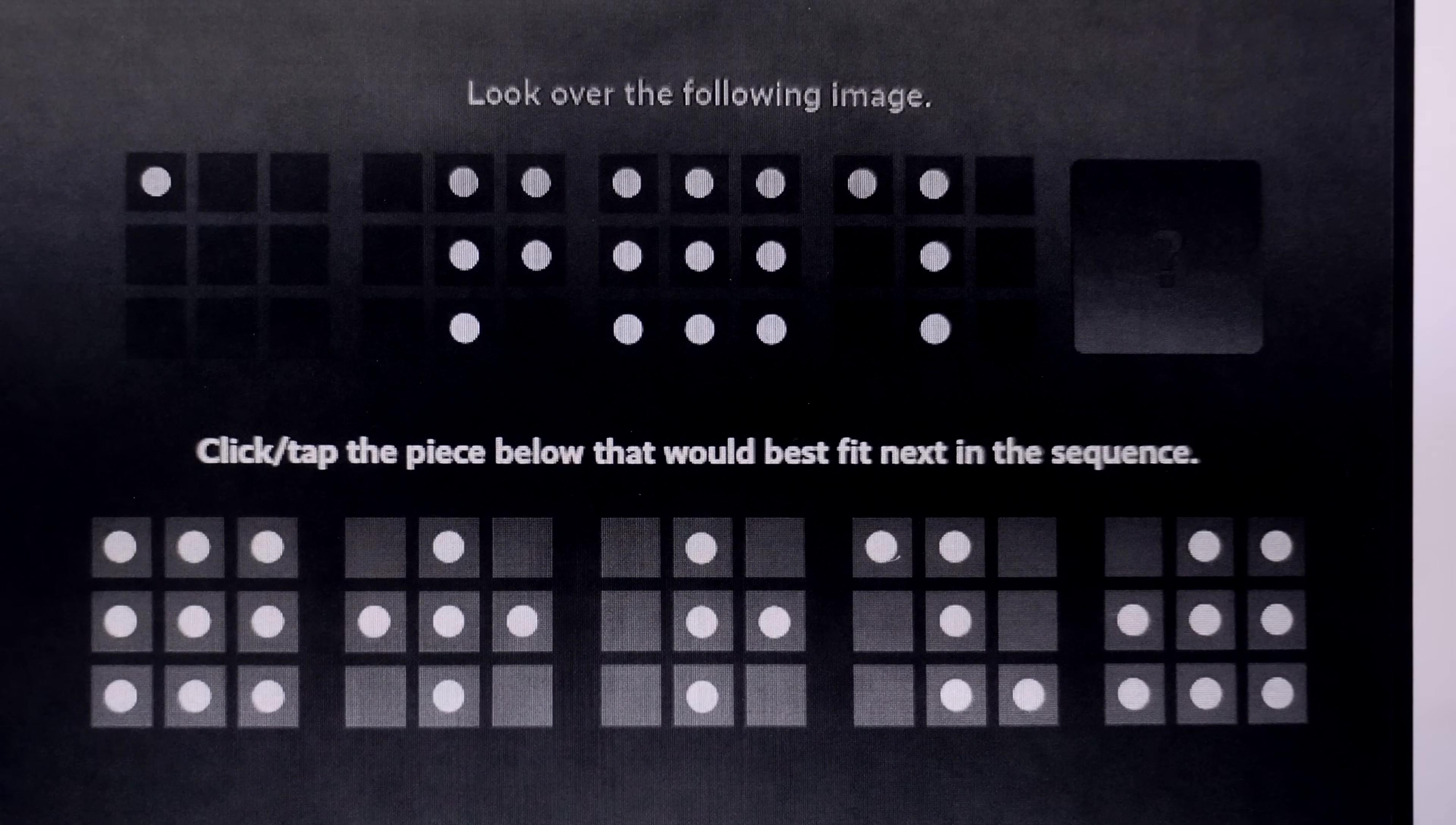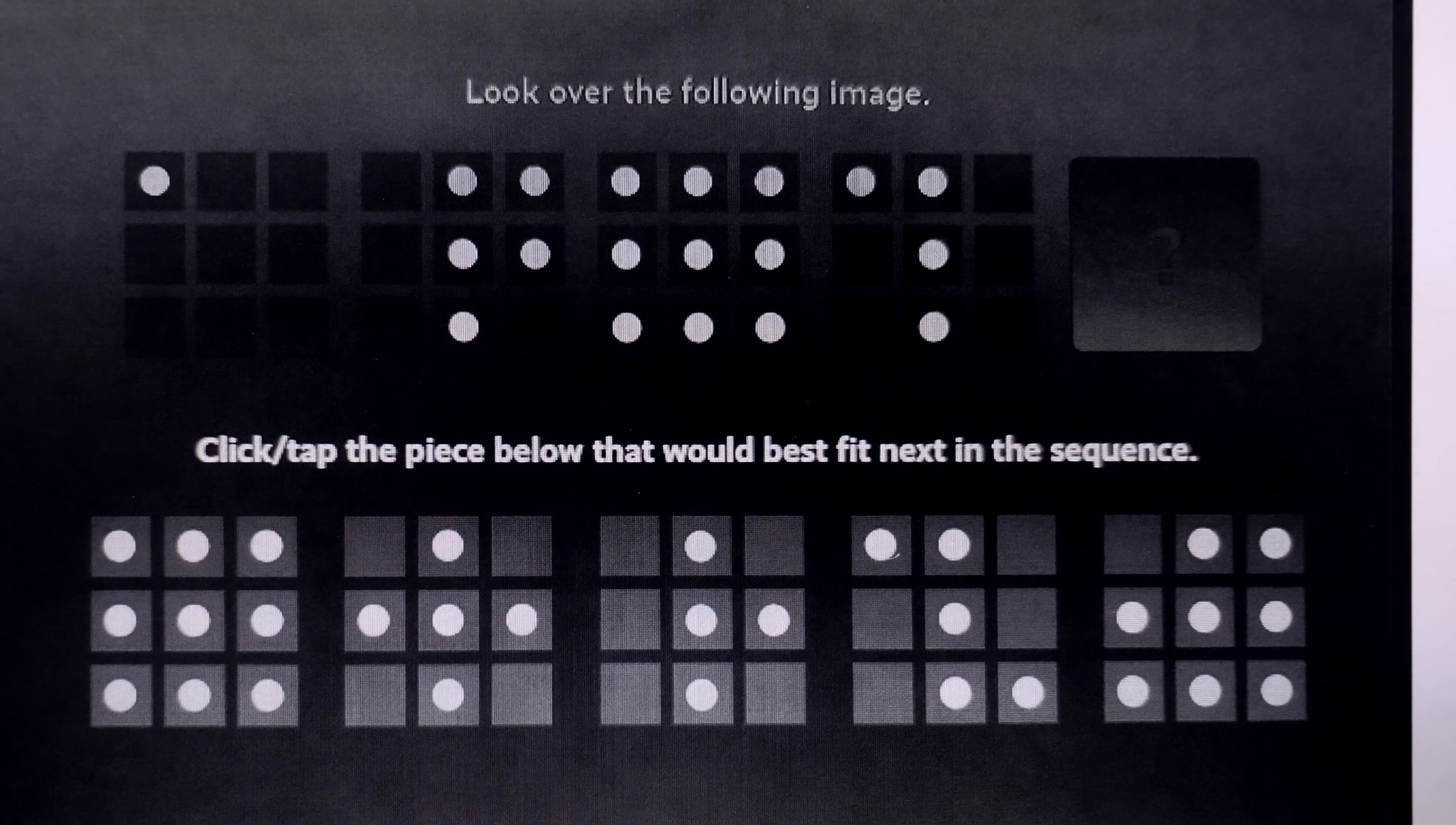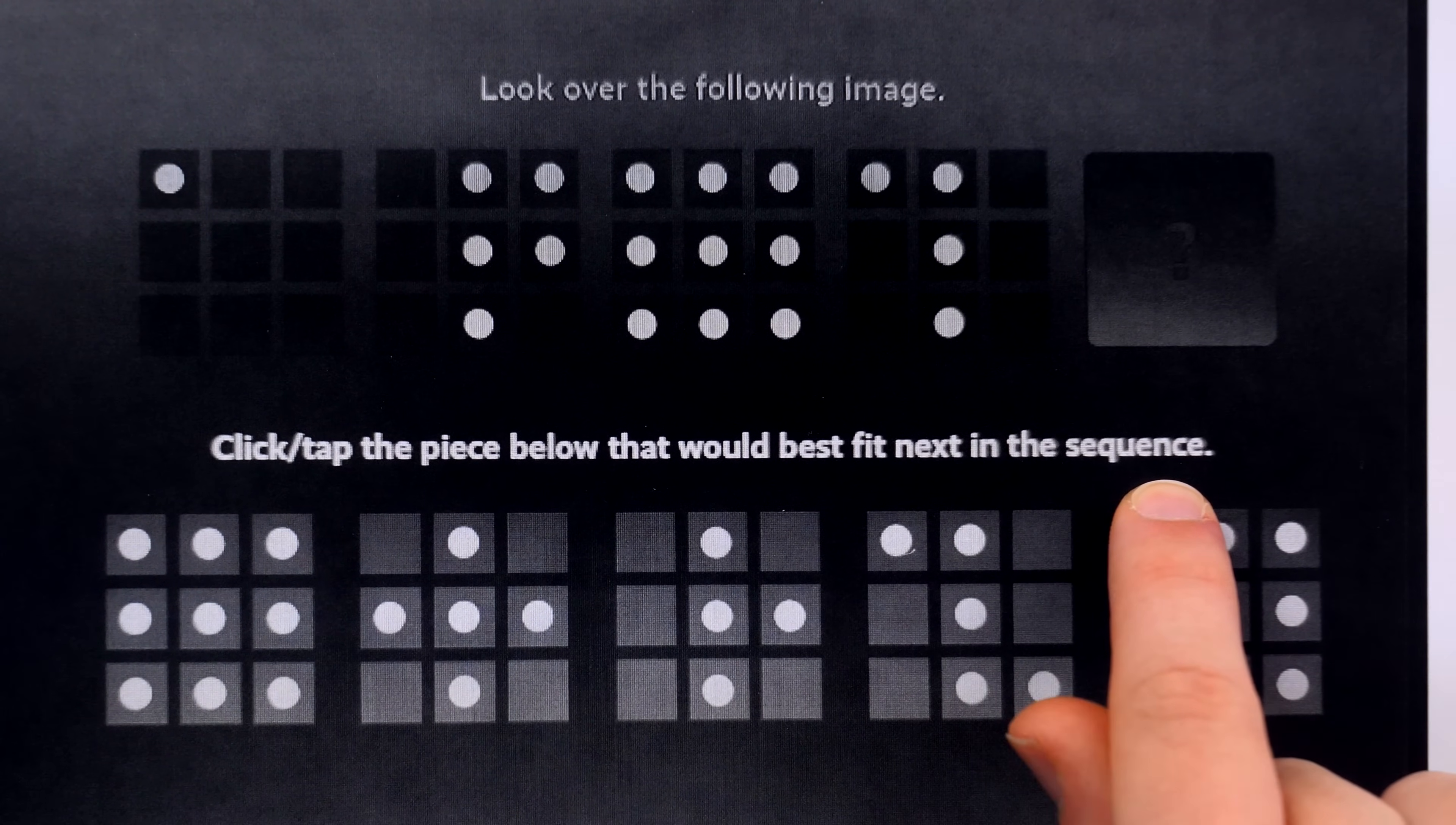The problem with this solution is the word sequence. The word sequence suggests that the order of these grids matters. However, this strategy of overlapping them and looking at the number of dots is not affected by order. We could put these grids in whatever order we please, and if we followed this explanation, we would still get option four. This makes it seem like perhaps a bad explanation to a problem that concerns a sequence.